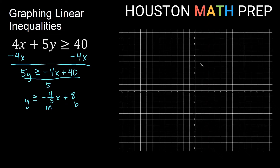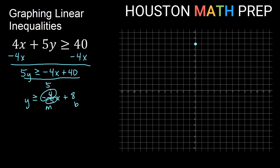Starting at a y-intercept of positive 8, I plot that point. Using the slope negative 4 over 5, the negative 4 tells me to go down 4, and the 5 on the bottom tells me to go right 5. So going down 4 and right 5 gives us our second point on the line.